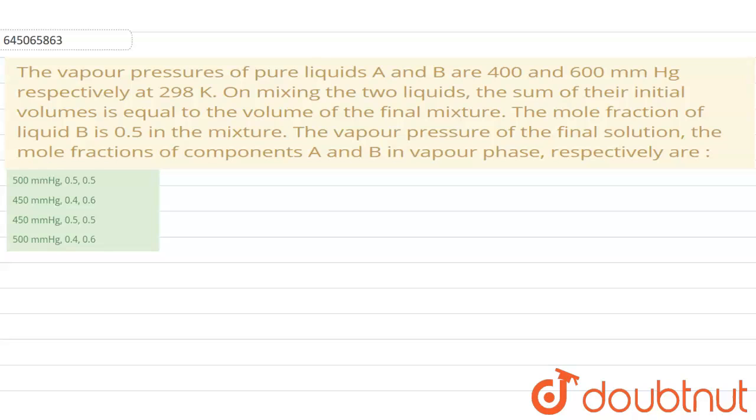Hello everyone. In this question it is given that vapor pressure of pure liquid A and B are 400 and 600 mm of Hg respectively at 298 Kelvin. Then on mixing the two liquids, the sum of their initial volume is equal to the volume of final mixture. The mole fraction of liquid B is 0.5 in the mixture. Then vapor pressure of final solution we have to find and the mole fraction of components A and B in vapor phase we have to find respectively.